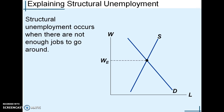Anything that keeps wage above equilibrium will cause structural unemployment. In the diagram, the supply side of the labor market is the workers — households supply the labor — and the demand side is the firms. The firms purchase the labor, so the demand side is businesses, the supply side is workers, and the price in this market is wage.